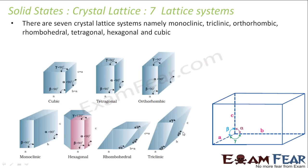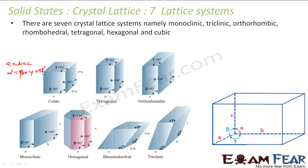The seven lattice system names are: monoclinic, triclinic, orthorhombic, rhombohedral, tetrahedral, hexagonal, and cubic. In a cubic system, everything is the same — a, b, and c are all equal, and alpha, beta, and gamma are all equal to 90 degrees.